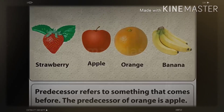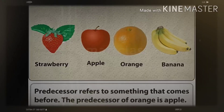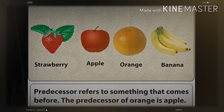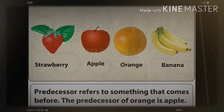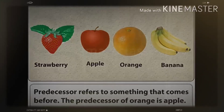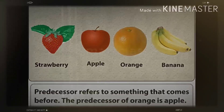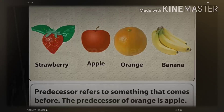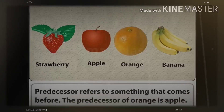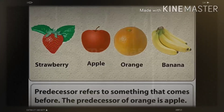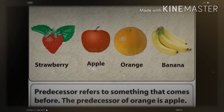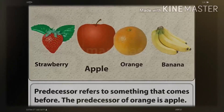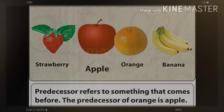Here are some fruits. Can you tell me what comes before orange? Did you find it? Yes — apple comes before the orange.